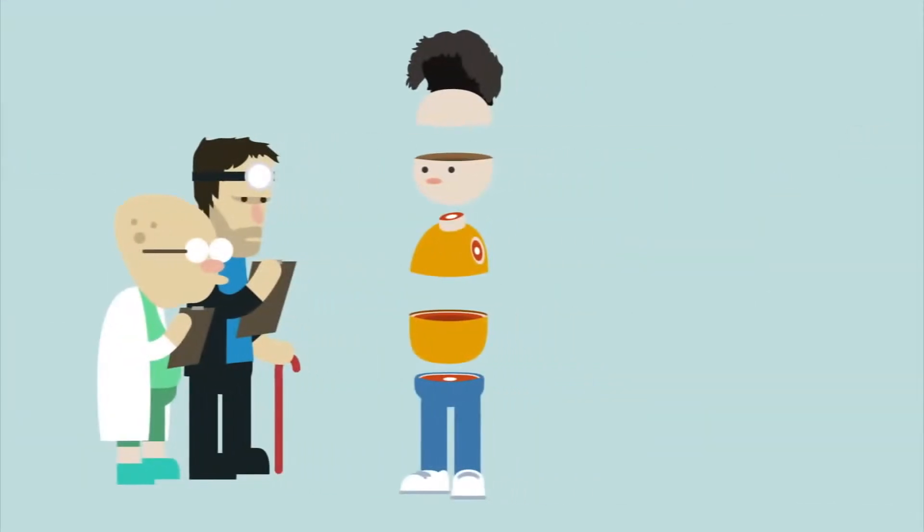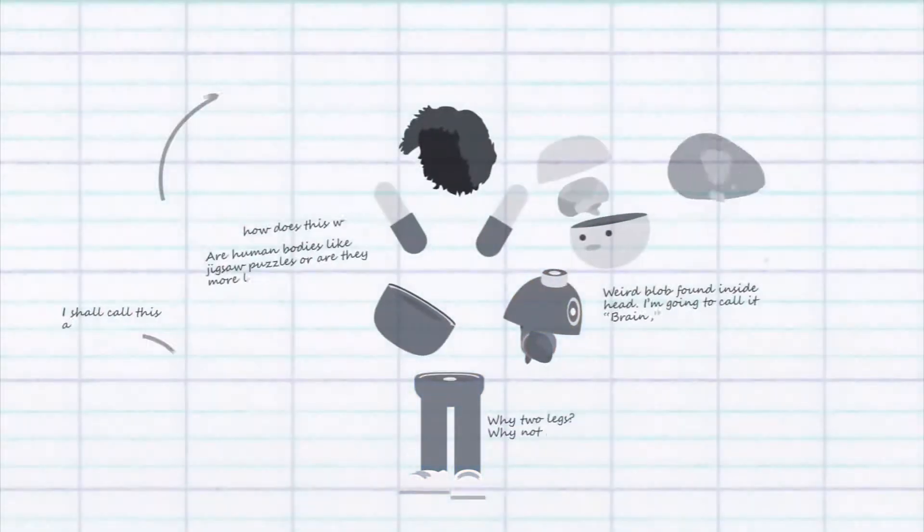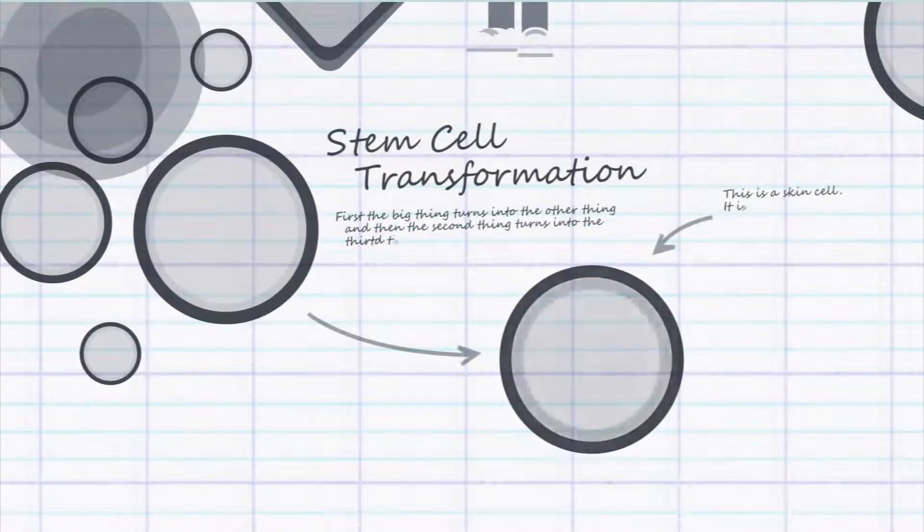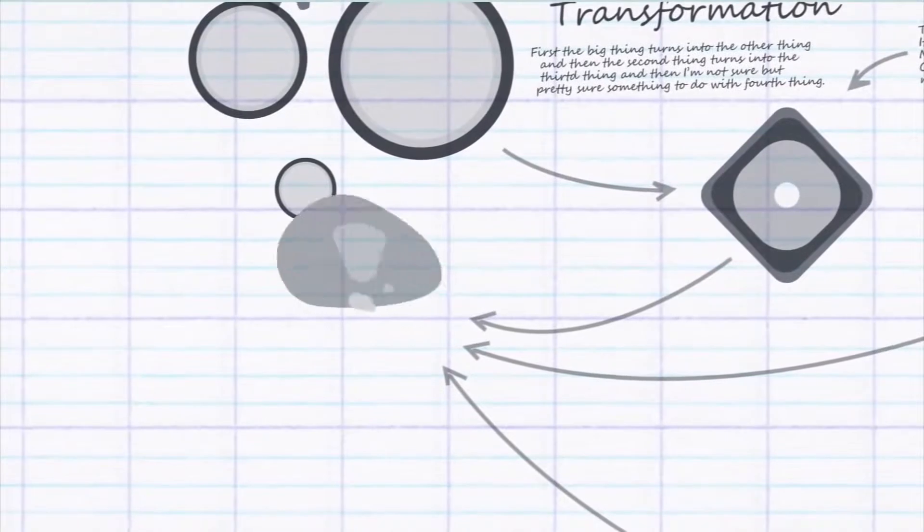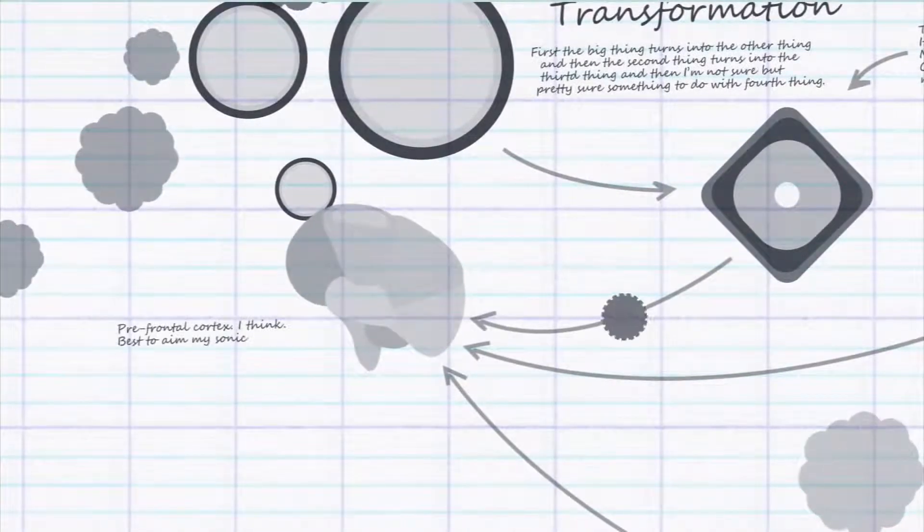While scientists and doctors hope to use all of these kinds of stem cells to create new tissue to heal your body, they can also use stem cells to help understand how the body works. Scientists can watch stem cells develop into tissue to understand the mechanisms that the body uses to create new tissue in a controlled and regulated way.